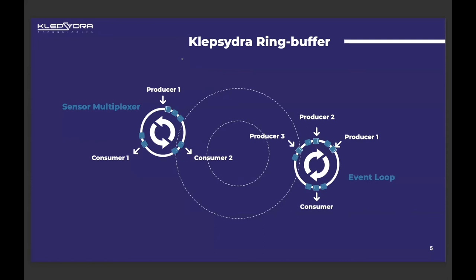On one hand, we have what we call the sensor multiplexer — one of our two APIs. The sensor multiplexer uses the ring buffer to multiplex data. So you have one producer of data, usually large volumes like a camera or a lidar, and more than one consumer. The advantage of our lock-free ring buffer is that each consumer can process data at different rates, completely independent of each other, and the sensor multiplexer ensures that the data remains consistent while it's being used, and once finished it's released back to the ring buffer.